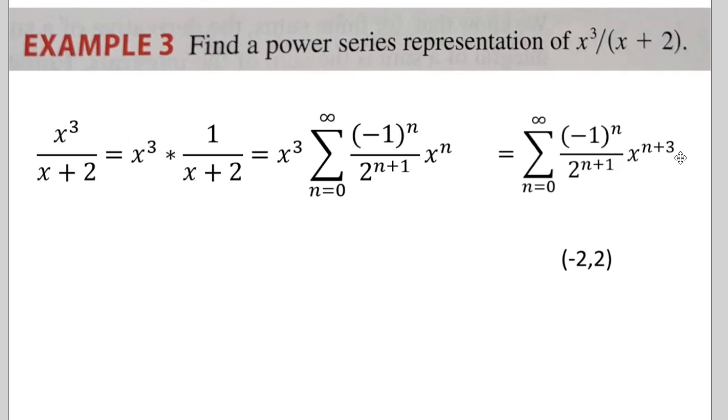The interval of convergence is going to be the exact same as the other one because my x never changed. That n plus 3 doesn't actually make any difference. It's no different than just having an n because it's going to keep going up. So my interval of convergence is still going to be negative 2 to 2.